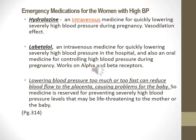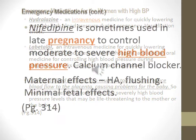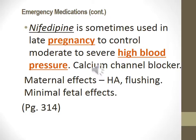Emergency medications for the woman with high blood pressure: Hydralazine is an intravenous medication for quickly lowering severely high blood pressure during pregnancy with a vasodilation effect. Labetalol is a beta blocker, also given intravenously to quickly lower severely elevated blood pressure. Lowering blood pressure too much or too fast can reduce blood flow to the placenta causing problems for the baby, so be very careful. This information is found in your textbook on page 314. Nifedipine is sometimes used in late pregnancy to control moderate to severe high blood pressure; it is a calcium channel blocker with maternal effects of headache and flushing with minimal fetal effects. Also found on page 314.